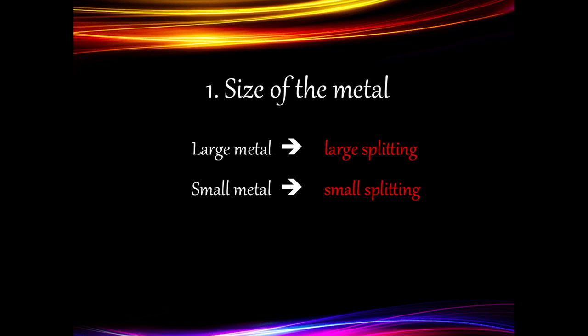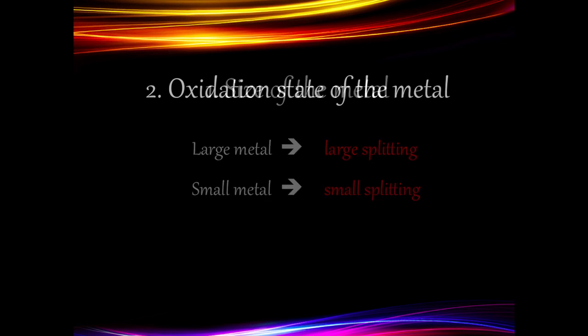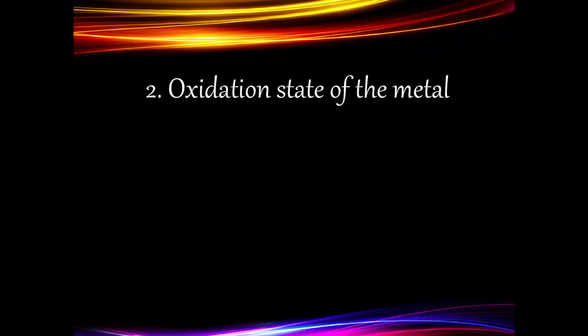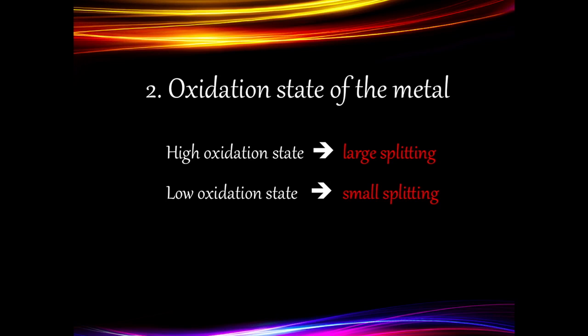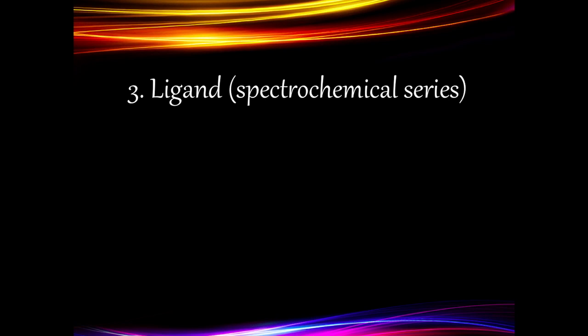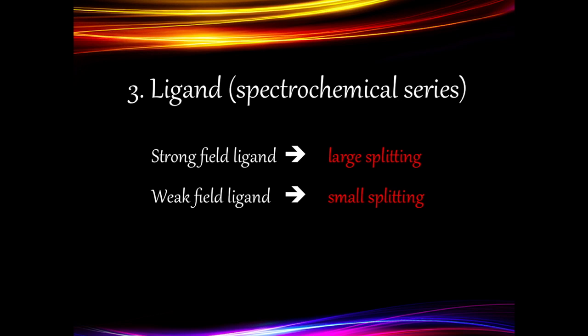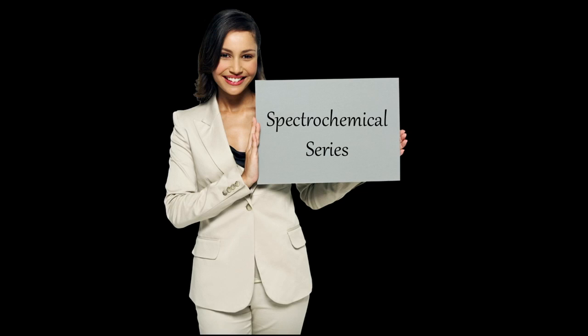The second factor is the oxidation state of the metal. If the metal has a high oxidation state, there will be large splitting, and if it has a low oxidation state, there will be small splitting. The third factor is the ligand: a strong-field ligand will cause large splitting, and a weak-field ligand will cause small splitting. This is where the spectrochemical series comes in.